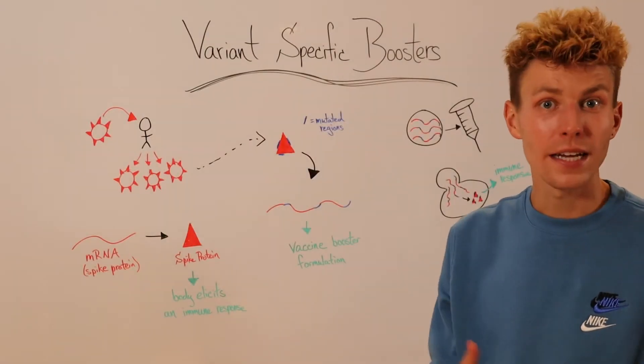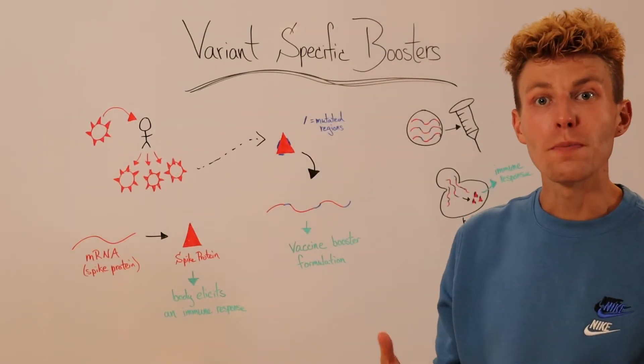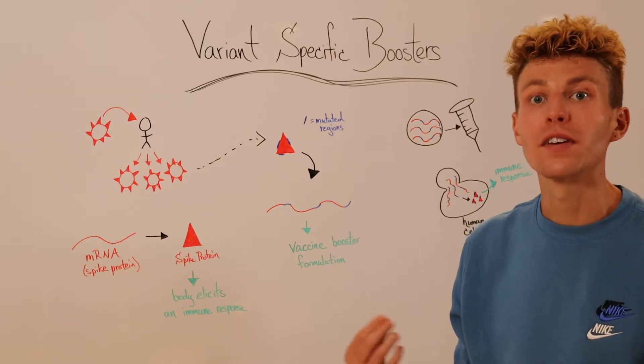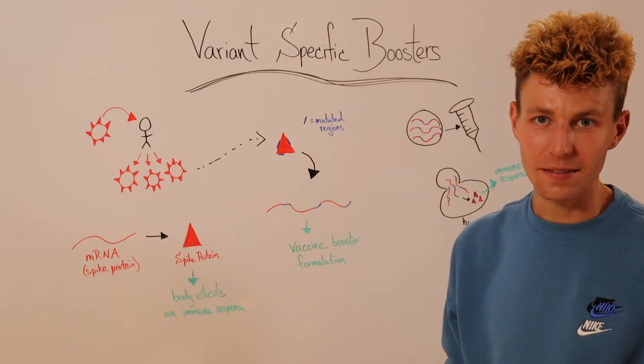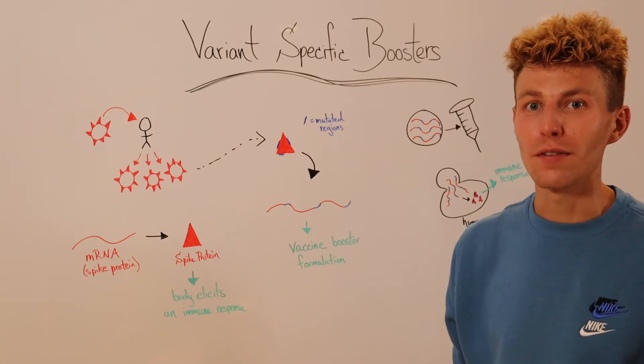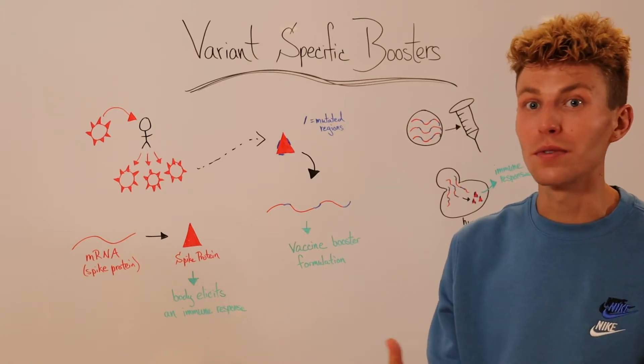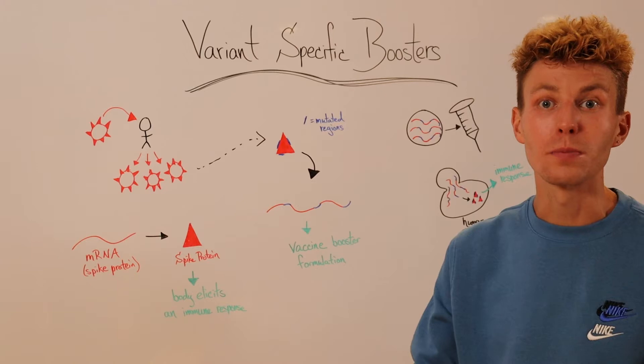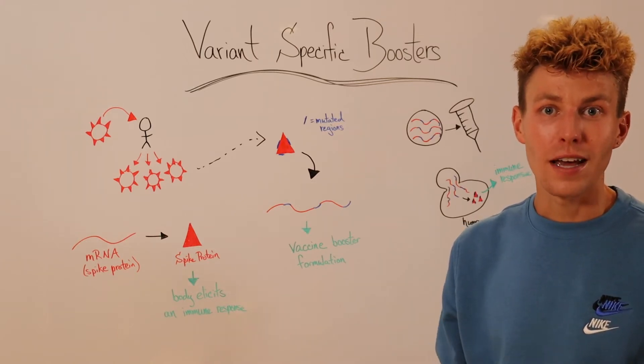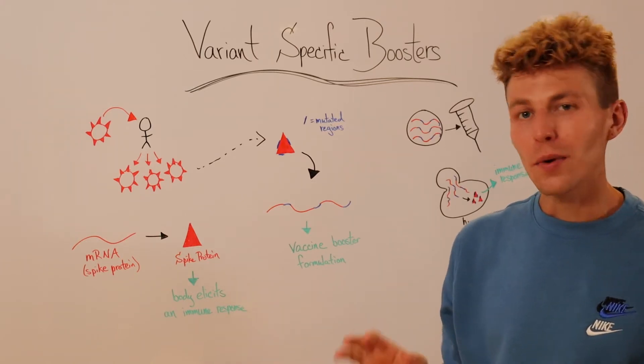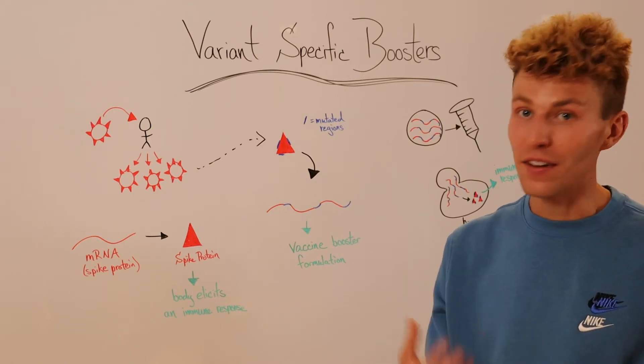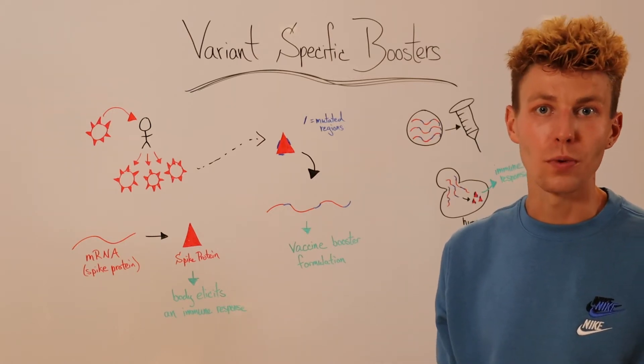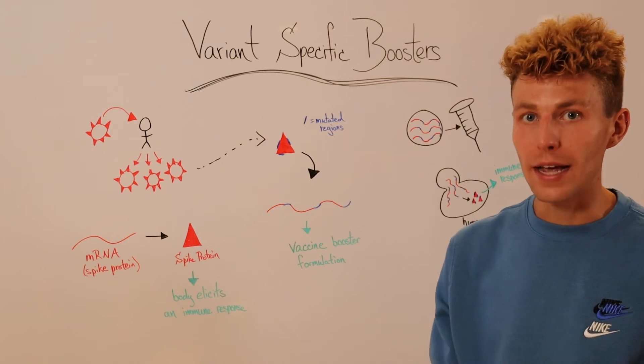In the next few months, and potentially on a yearly basis, you may hear of variant-specific boosters for COVID-19. These boosters are very similar to ones one would receive for a different type of pathogen, such as the flu, which is predicted year after year in order for us to have that annual shot. I wanted to break down how these variant-specific boosters actually work in regards to mRNA technology.